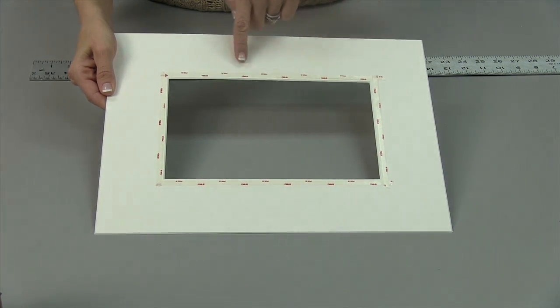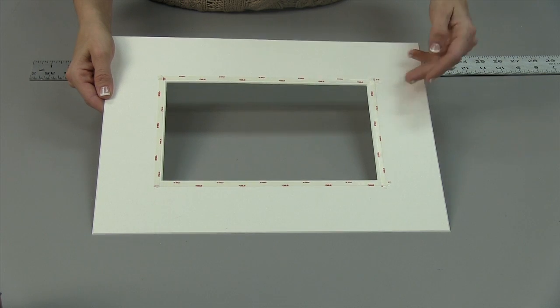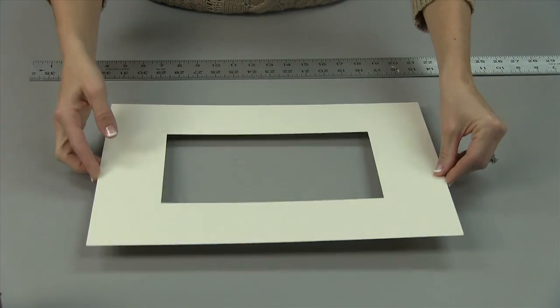Place 3M ATG fillet tape around the underside of the mat opening, being sure to leave the ATG cover strip in place.